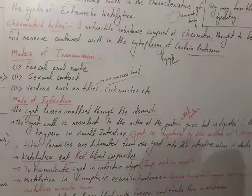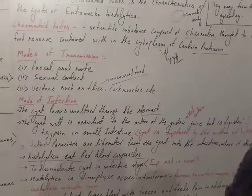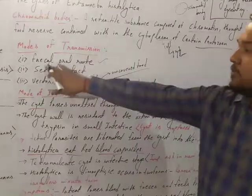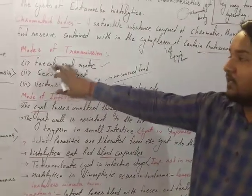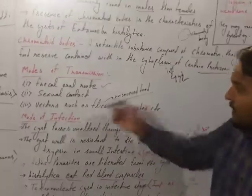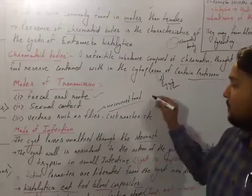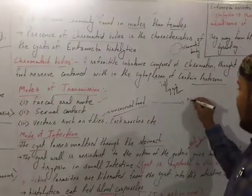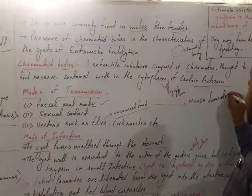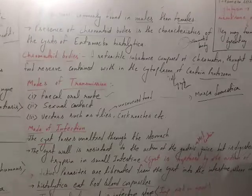There are two modes of transmission for amoebiasis. The first is the fecal-oral route — fecal material, that is waste material, is transferred through the oral cavity. It is also transferred through sexual contact and via vectors such as the housefly, Musca domestica.